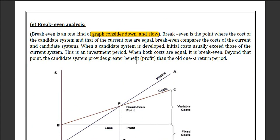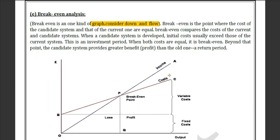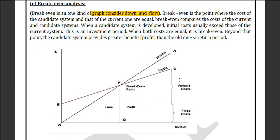Break-even analysis means breaking the data into several parts to show the financial picture. Here we have variable cost and fixed cost shown in two diagrams, broken down into two sections. In one section we have fixed cost and in the other we have variable cost. The income section is higher than the cost section, which means we have already generated profit or benefit.